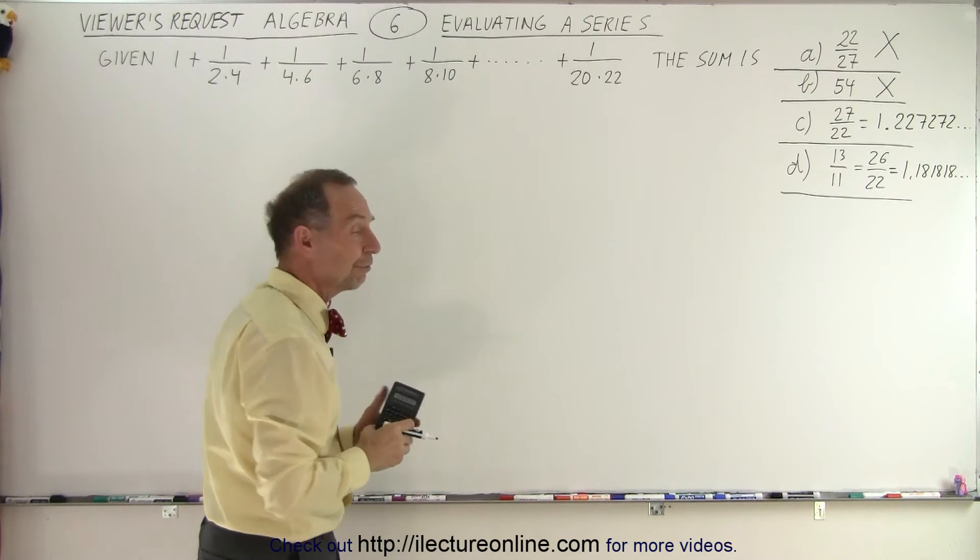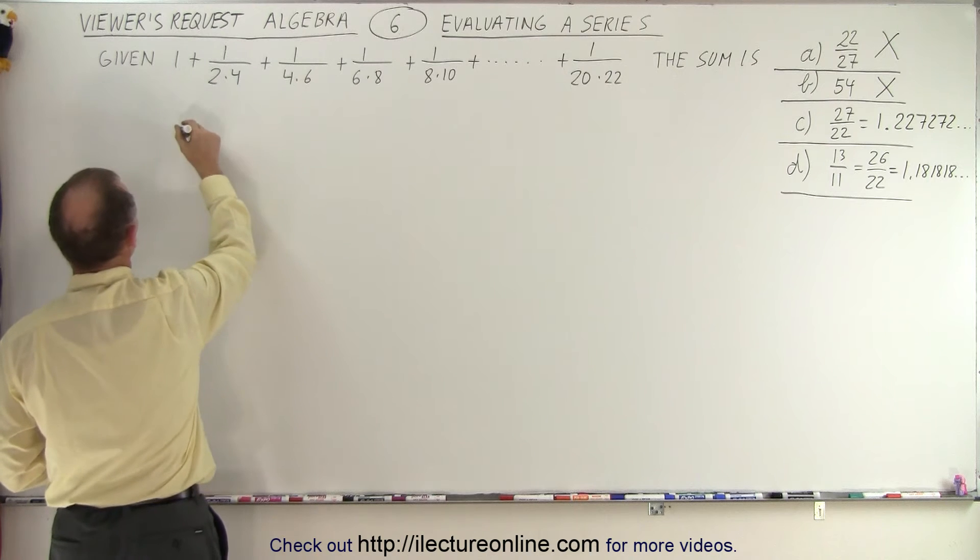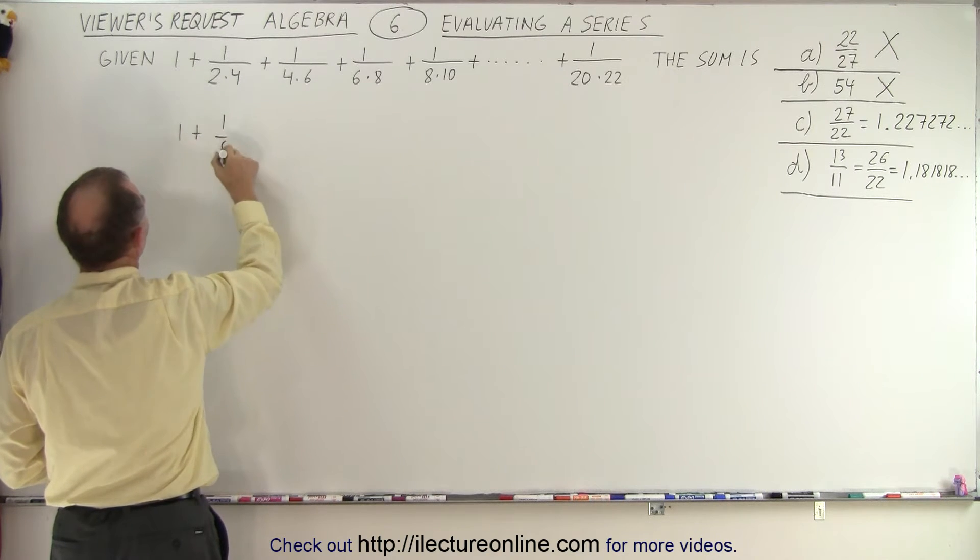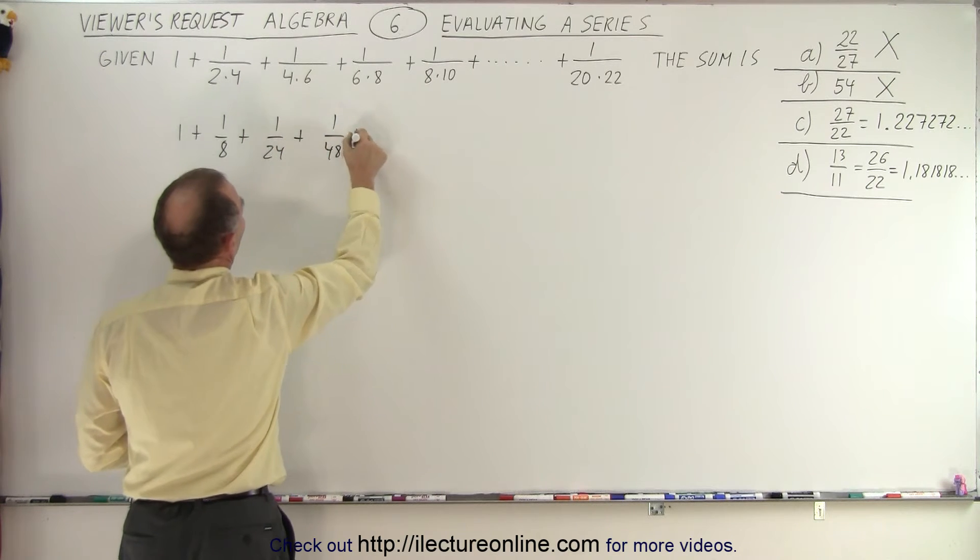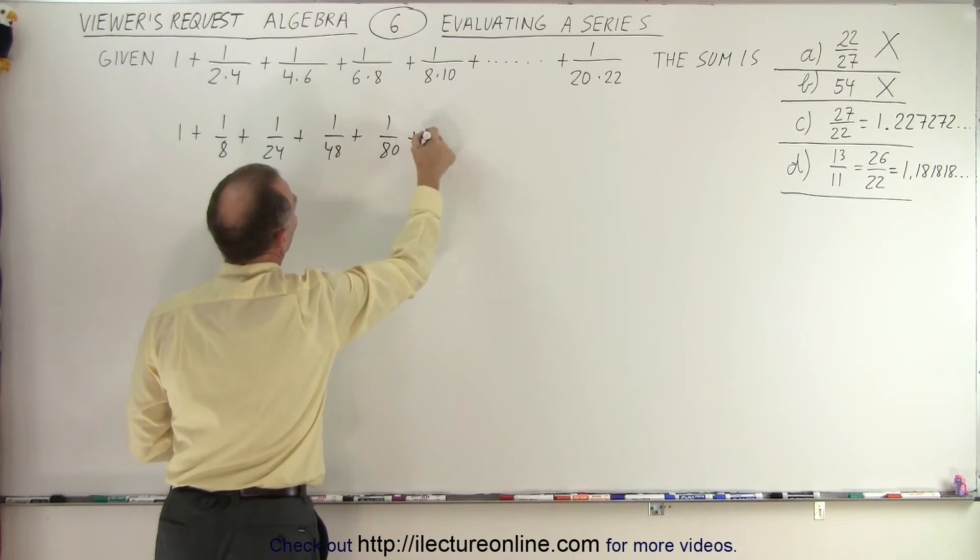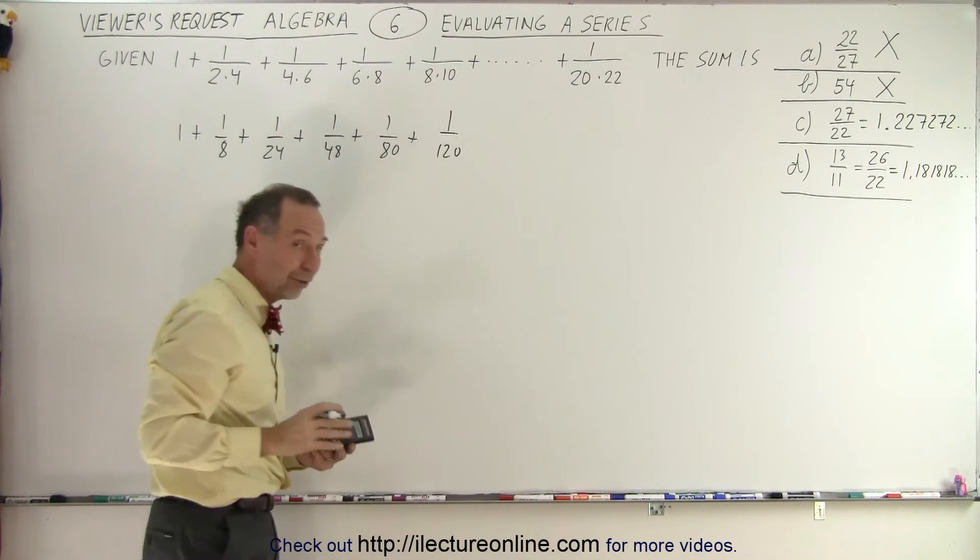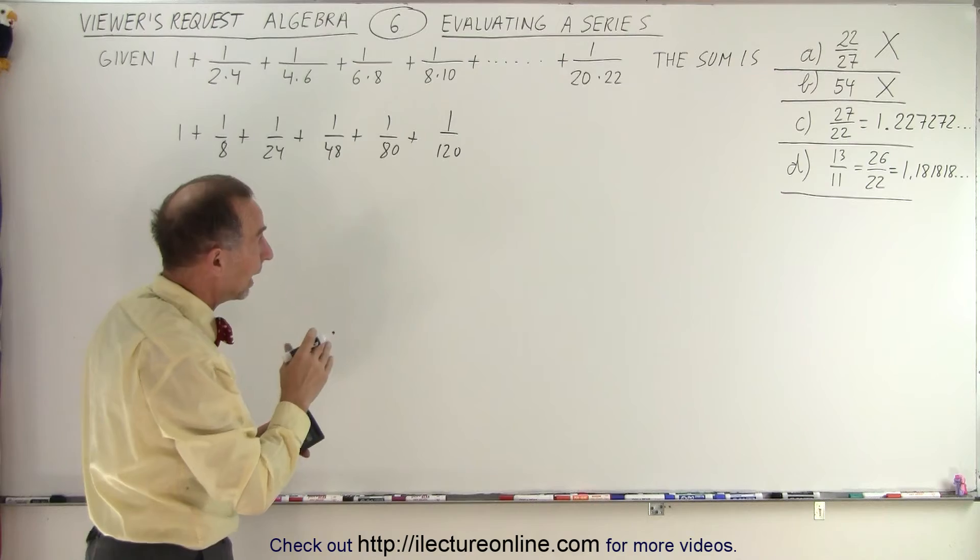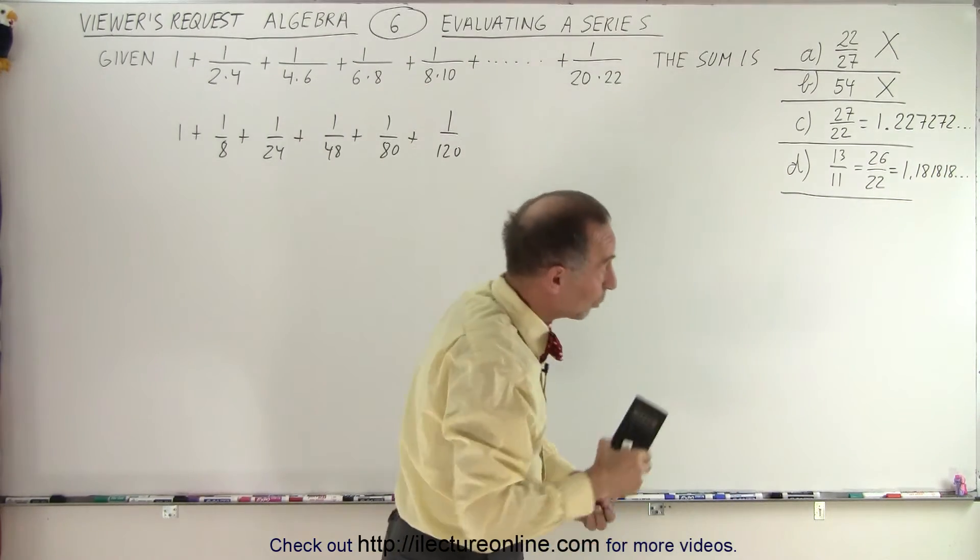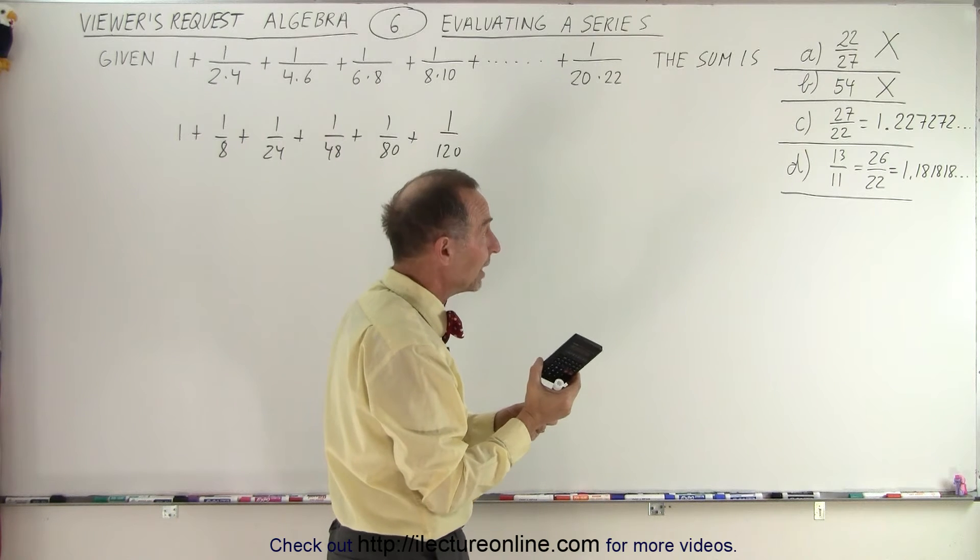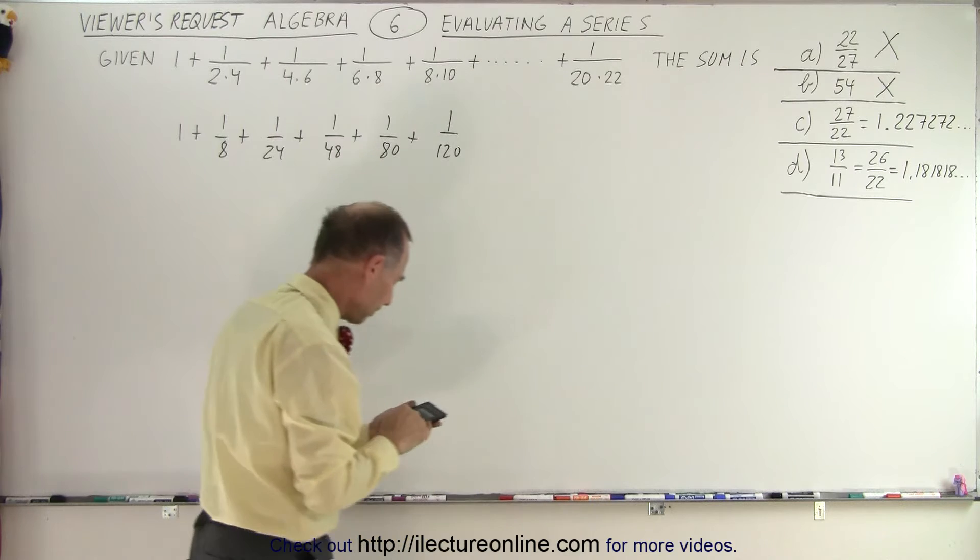And now let's see what the first so many terms are added together. So this would be 1 plus 1 over 8 plus 1 over 24 plus 1 over 48 plus 1 over 80. And the next term would be 10 times 12 would be 1 over 120, and so forth. So let's add those terms together. And then if we exceed this number, then this is the only possible answer. If it doesn't exceed it, we just keep going until either we are equal to 13 over 11 or it exceeds that.